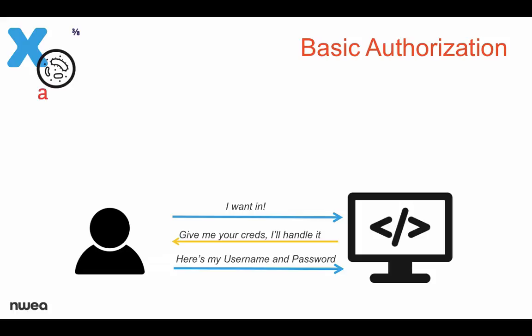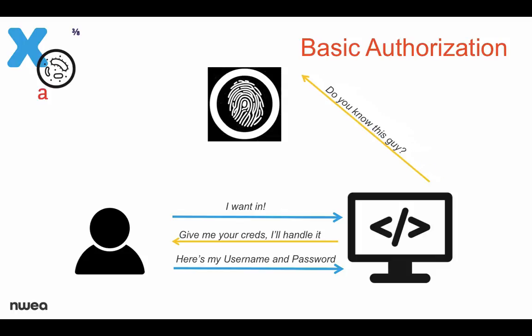I include basic auth in SSO because there is the possibility that the web application is verifying that username and password against the IDP, and that the IDP trusts this application and confirms the user's credentials. We generally don't want to use this model because it's pretty open security-wise, and it means you have to enter your username and password over and over again, even if you do have a shared store in the back end.